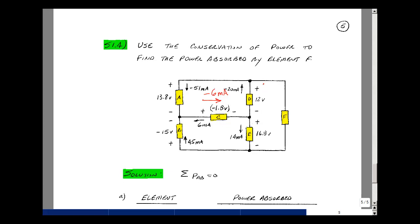For element D, the same thing. I need to have the current entering the plus terminal, so I'll turn the sign around to plus 20 milliamps. 20 milliamps times 12 volts is 240 milliwatts.